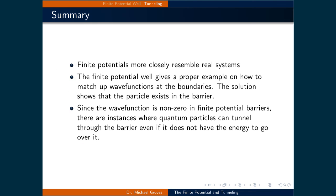In this lecture, we looked at two quantum mechanics problems: the finite potential well and tunneling. To solve these problems, we applied the boundary conditions that the wave function was continuous and the derivative of the wave function was continuous. The solution showed that quantum particles can exist in the walls that are meant to trap them, leading to instances where they can escape or tunnel through, even when they do not have sufficient energy to overcome the barrier.